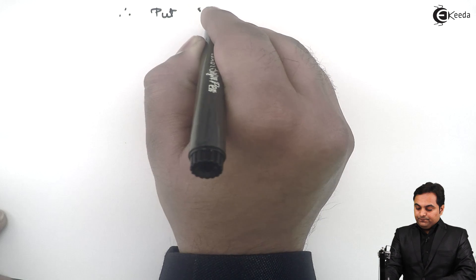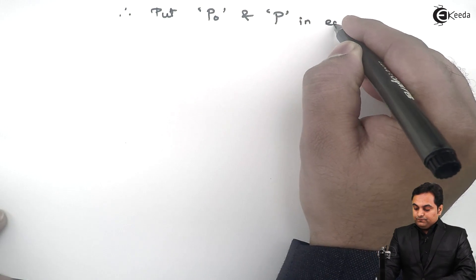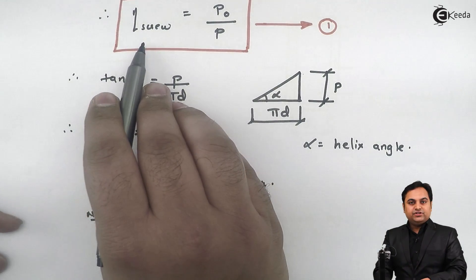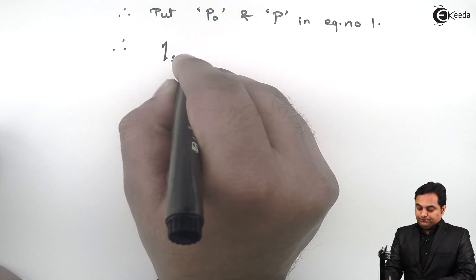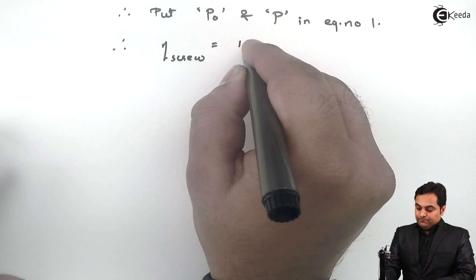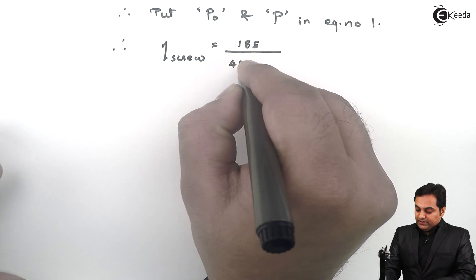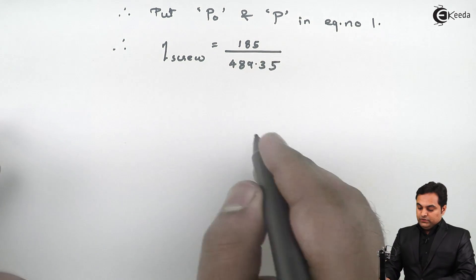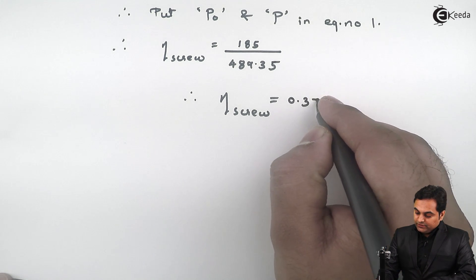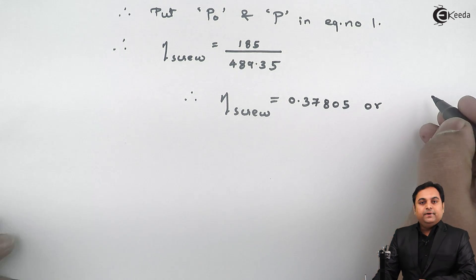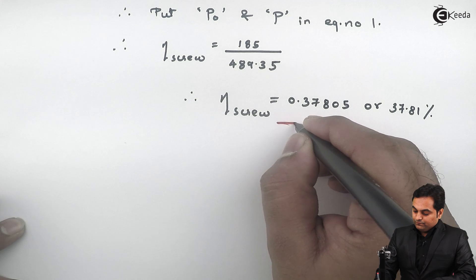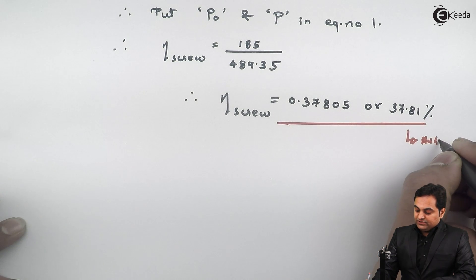Now substituting P0 and P into equation number 1: efficiency of screw = P0 / P = 185 / 489.35 = 0.37805. Multiplying by 100, the efficiency of screw is 37.81%. This is our first answer.